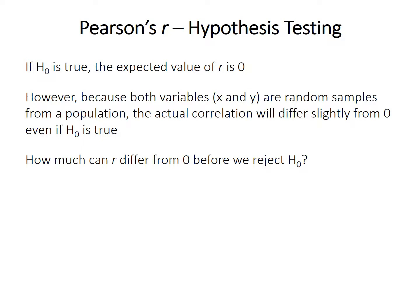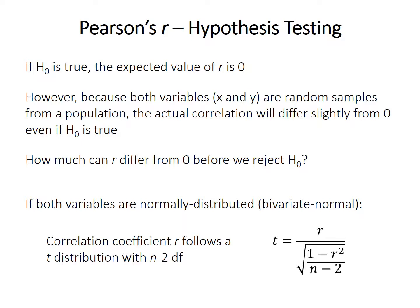If the null hypothesis is true, we expect r to be 0, meaning no correlation. However, because observations are random samples, the actual correlation might differ slightly from 0 even when the null is true. We need to know the probability of obtaining a particular outcome — how much can r differ from 0 before we reject the null hypothesis? Pearson determined that when both variables are normally distributed, r can be converted to a t-statistic that follows the t-distribution with n − 2 degrees of freedom, and we calculate our p-value from that t-statistic.